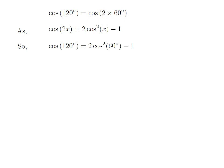Let us apply the above identity for cosine of 120 degrees. Here x is 60 degrees. So cosine of 120 degrees is equal to 2 times square of cosine of 60 degrees minus 1.